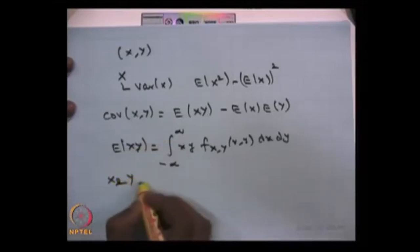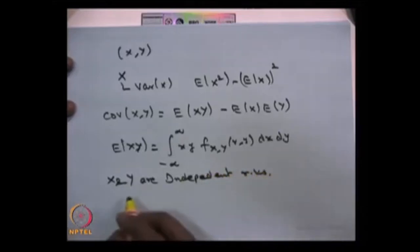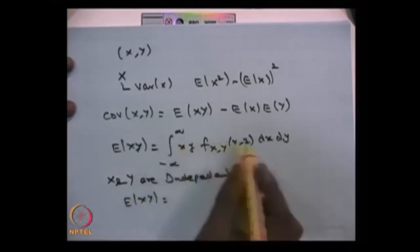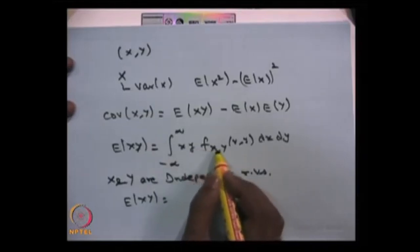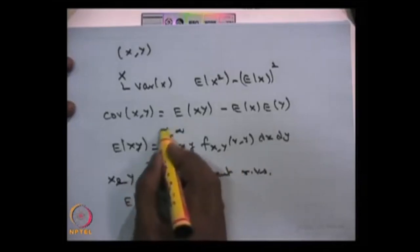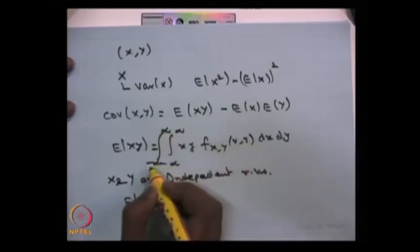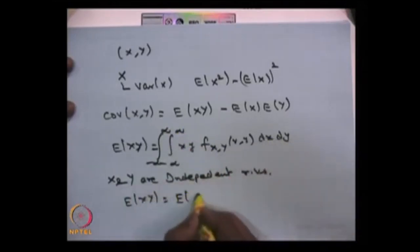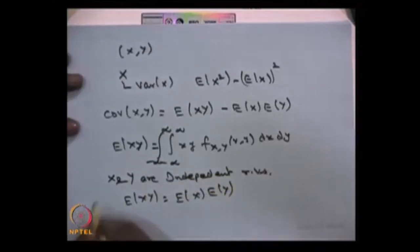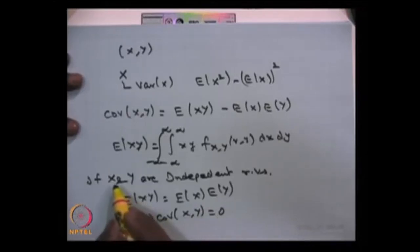Suppose X and Y are independent random variables. For the continuous case, the double integral splits into two parts because f(X, Y) equals the product of the individual density functions. This gives the integral from minus infinity to infinity of X times f(X) dx, times the integral from minus infinity to infinity of Y times f(Y) dY, which is just E[X] times E[Y]. Therefore, if two random variables are independent, it implies the covariance of the two random variables is 0. But covariance of X, Y equal to 0 does not imply the random variables are independent.